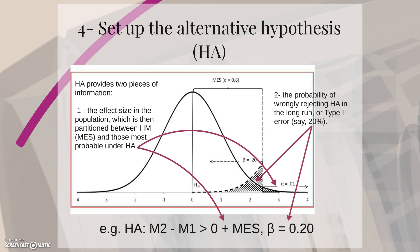And the probability of rejecting the alternative hypothesis wrongly in the long run, or type 2 error, which we can set up at 20%.